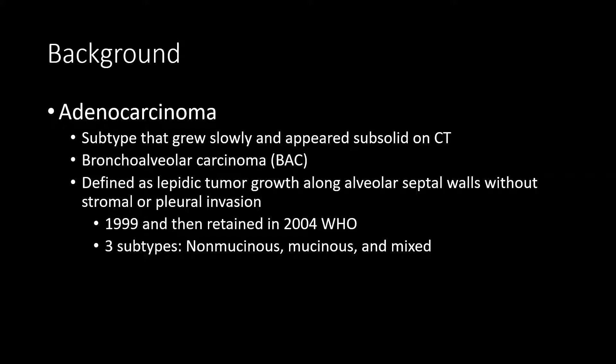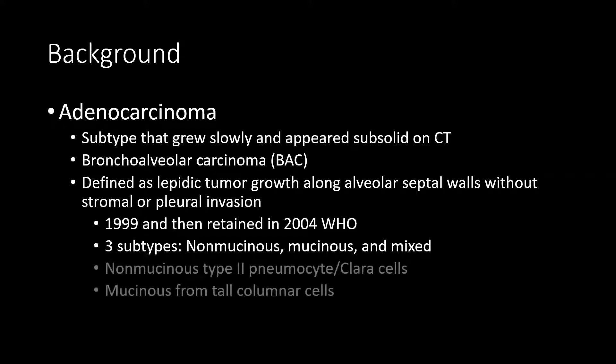At that point, three subtypes were reported: non-mucinous, mucinous, and mixed. The non-mucinous cell type was the more common type, arising from type 2 pneumocytes and Clara cells, while the mucinous type arose from tall columnar cells with exuberant mucin production.